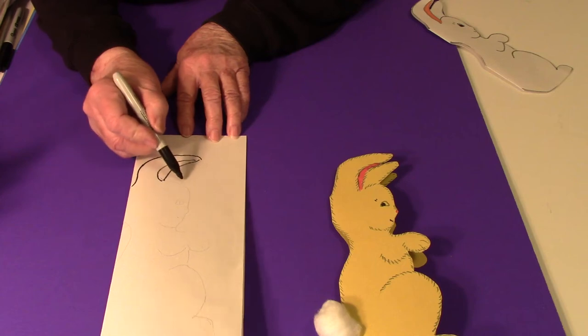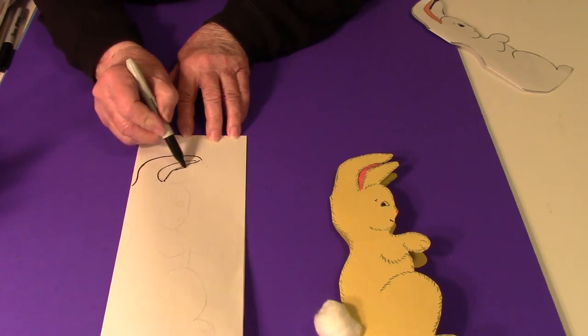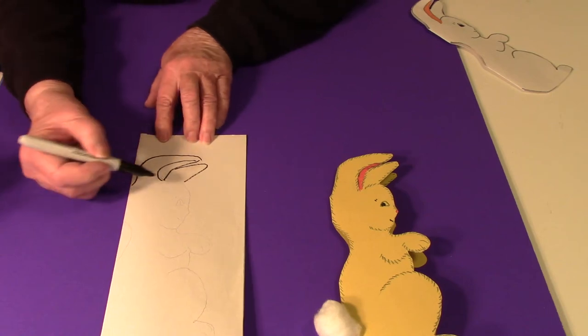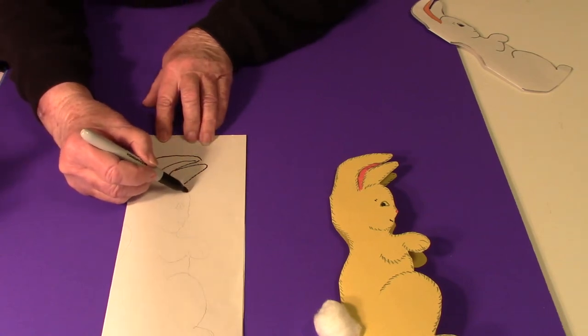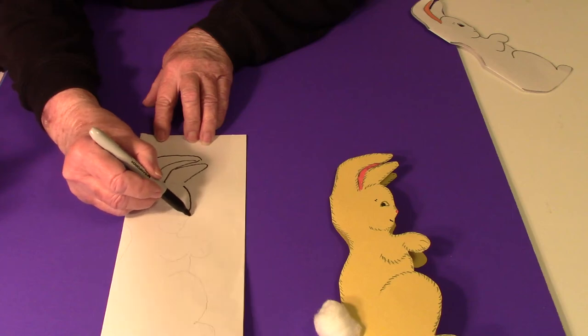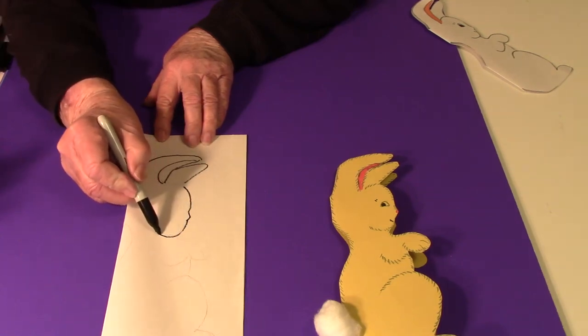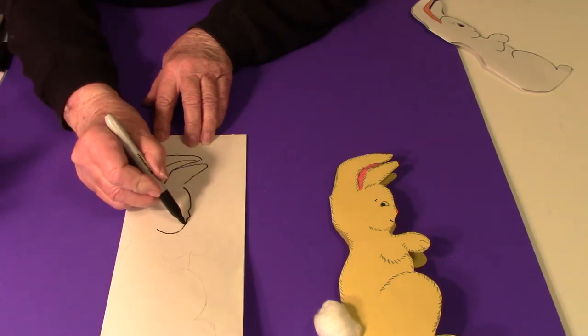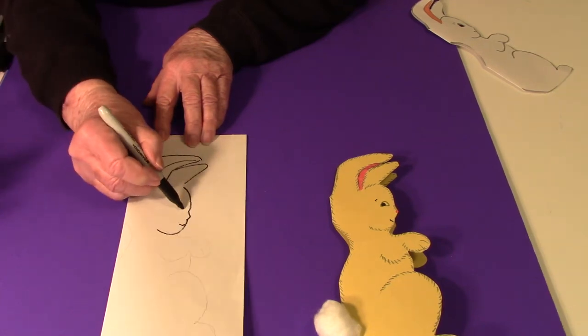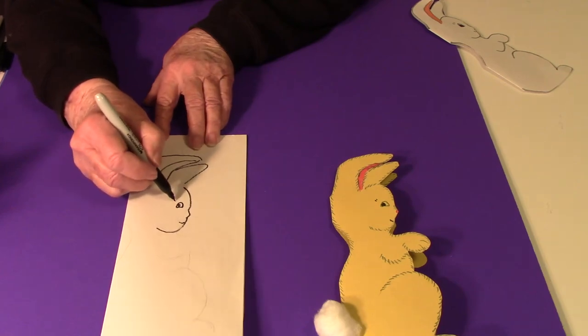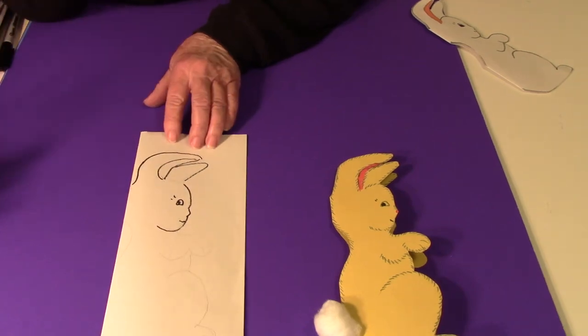Then for the other ear, just make a loop and come down. For the face, curve around with a little indentation for the nose, then on down and around for the little chin. I made a little mouth and an upside-down U for the eye. Yours doesn't have to look like mine—this is your project.